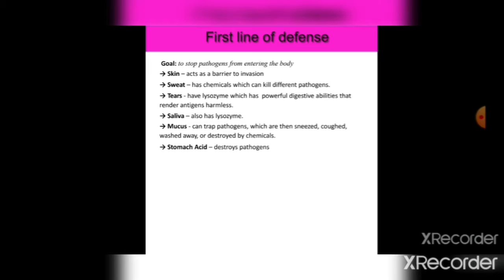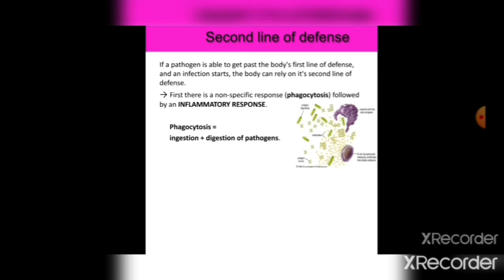The first line of defense aims to stop pathogens from entering the body. These are physical and chemical barriers such as skin, which acts as a barrier to invasion; sweat, which contains chemicals that can kill pathogens; tears, which have lysozyme enzymes with powerful digestive abilities; saliva, which also has lysozyme; mucous, which traps pathogens that are then washed away or destroyed by chemicals; and stomach acid, which destroys pathogens.